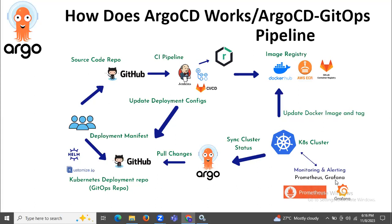ArgoCD is a Kubernetes controller responsible for continuously monitoring running applications using tools like Prometheus, Grafana, and CloudWatch. It compares the live state of applications to the desired state specified in the Git repository. Any deployed application whose live state differs from the desired state is defined as out of sync.